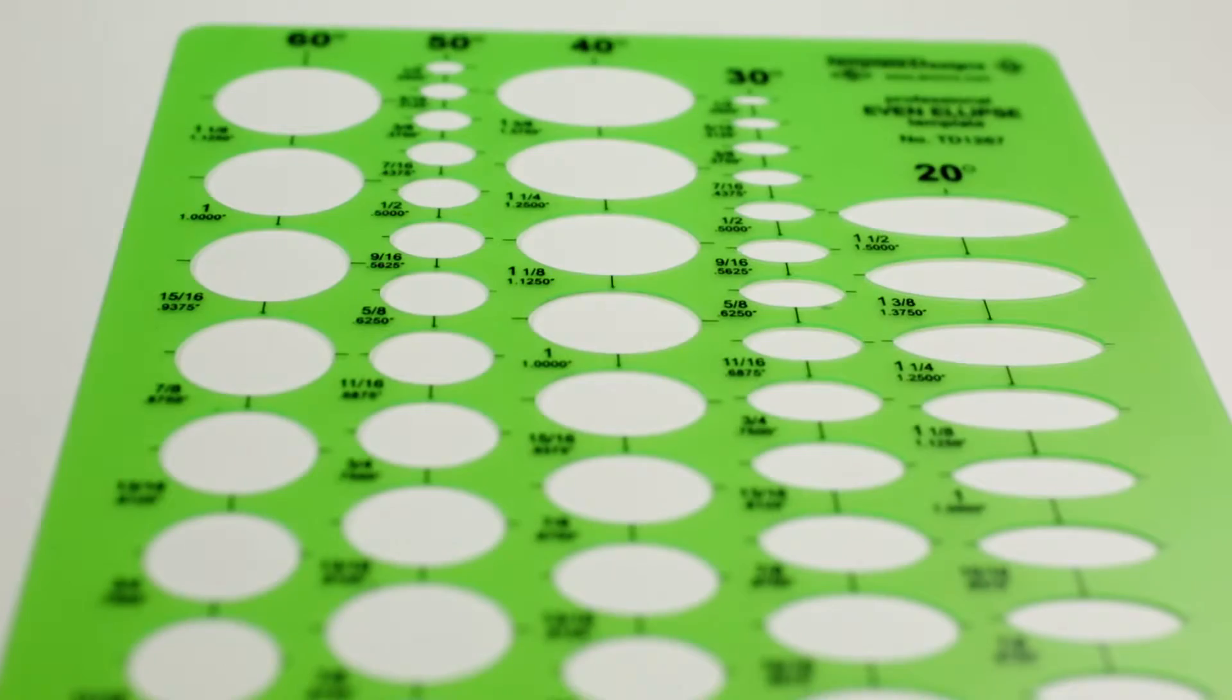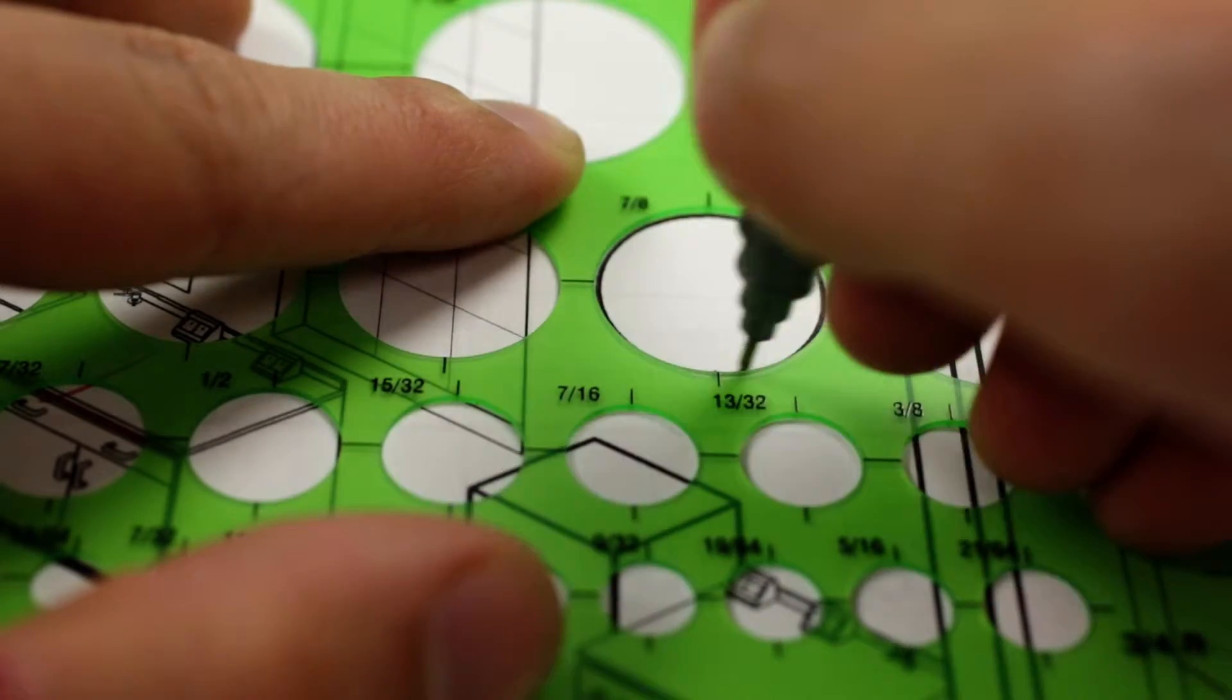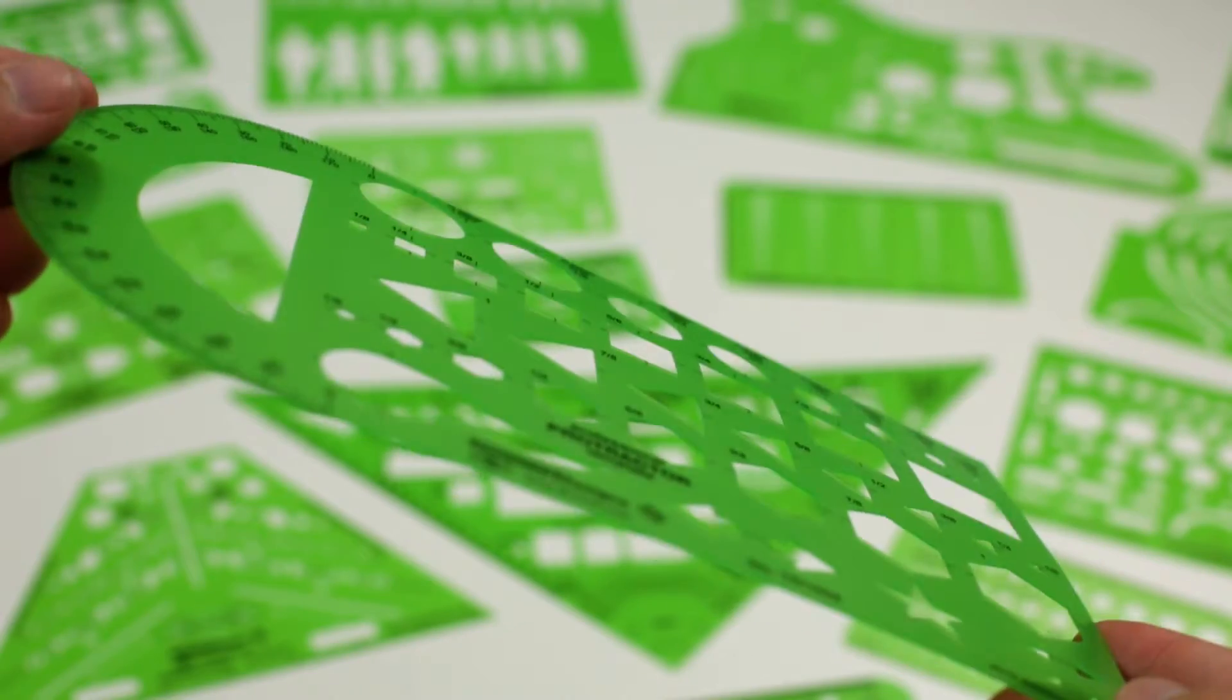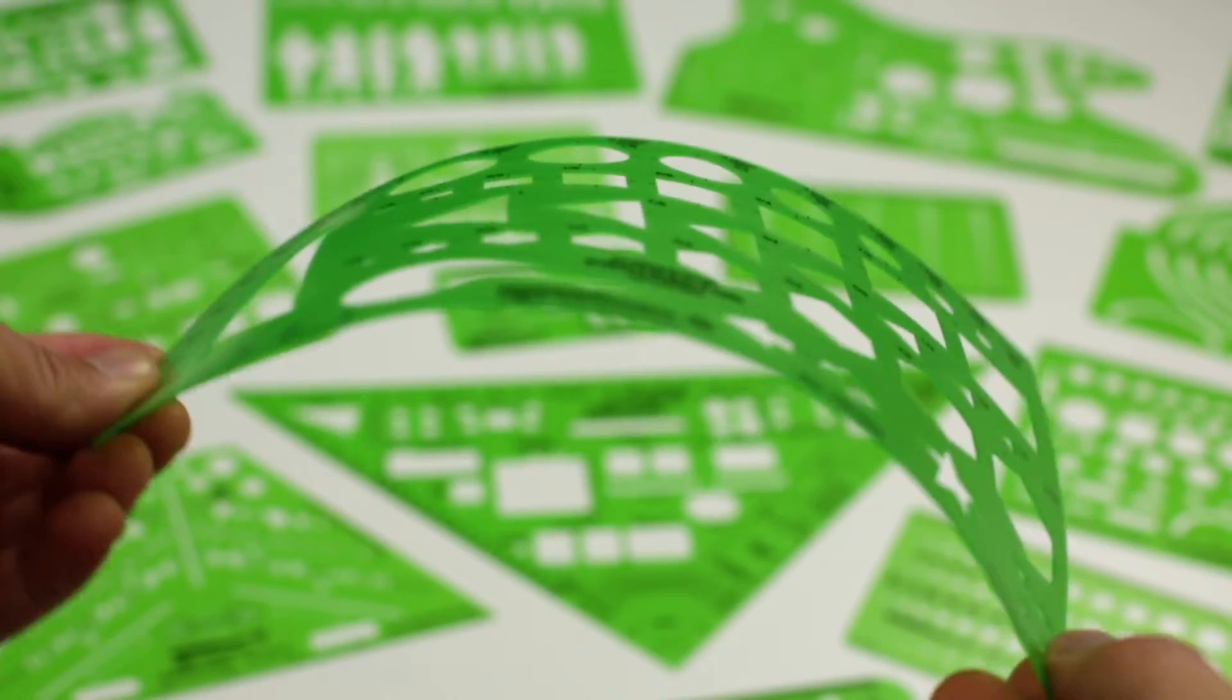All of our templates are milled, not punched out or pressed. The milling process ensures precision accuracy. Our templates are made from a non-glare, odor-free, flexible, durable, translucent green plastic.